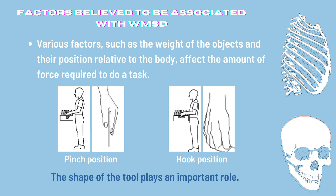Various factors such as the weight of objects and their position relative to the body affect the amount of force required to do a task. It requires more force to lift and carry a box with arms held outstretched and away from the body, or in a pinch position, than in a hilt position. The shape of the tool plays an important role too — tools that do not allow the best position of the wrist, elbow, and shoulders substantially increase the force required.